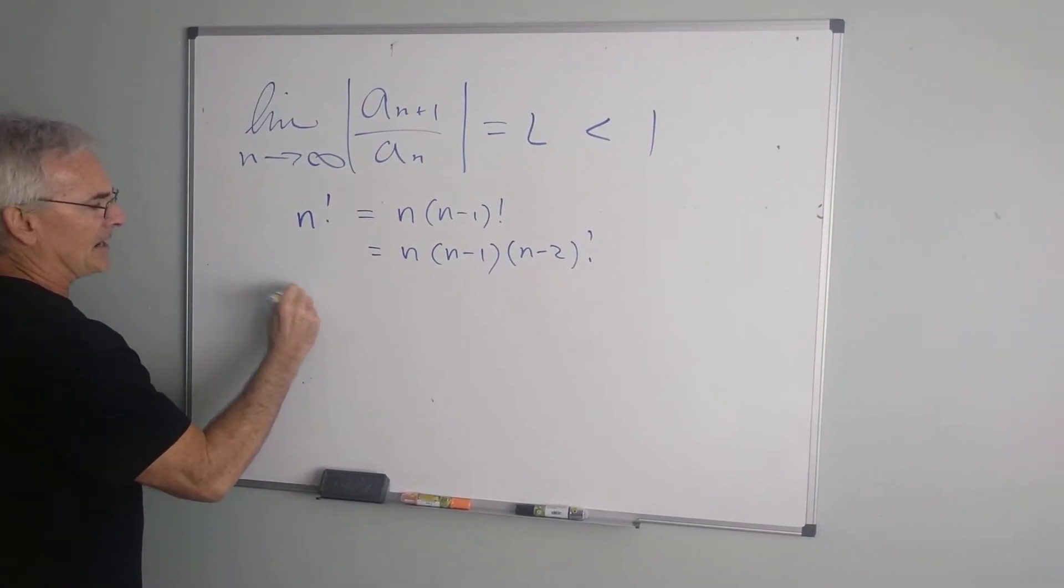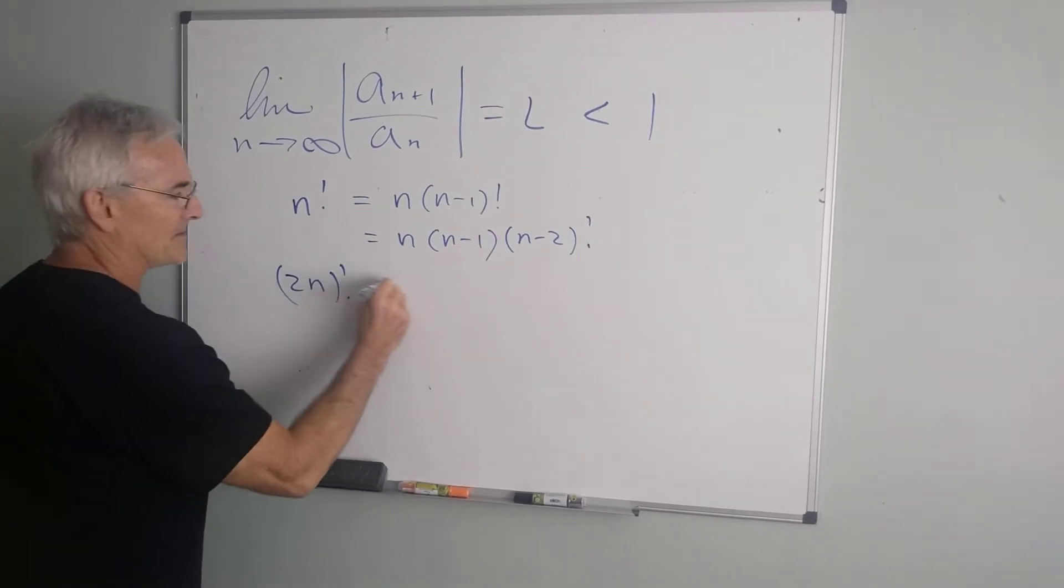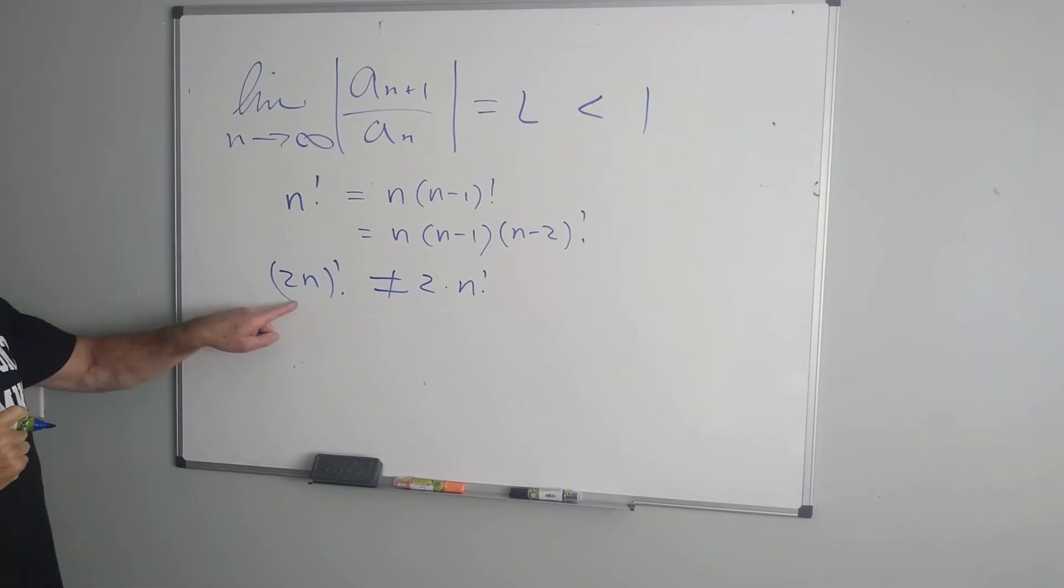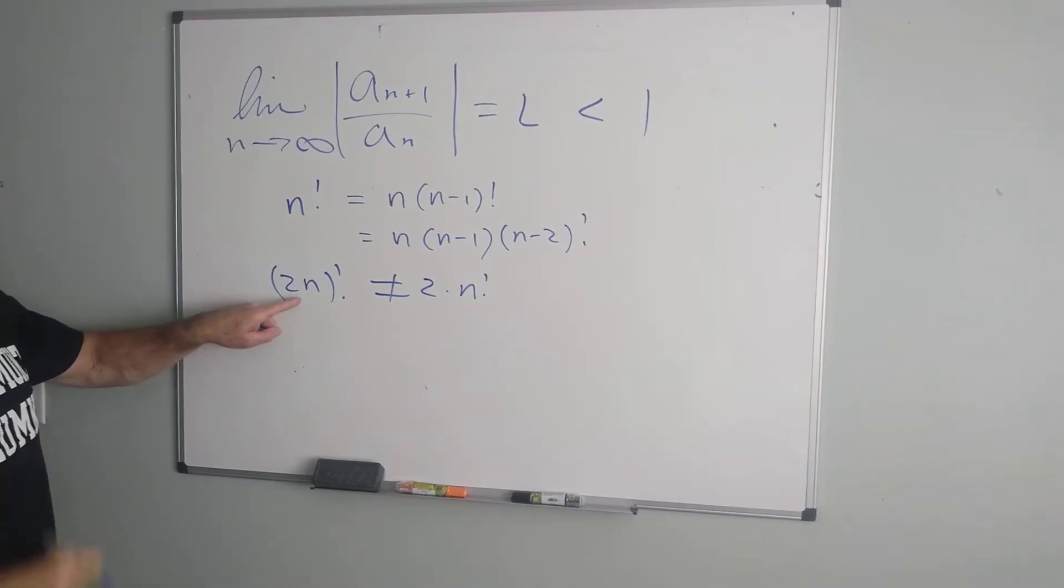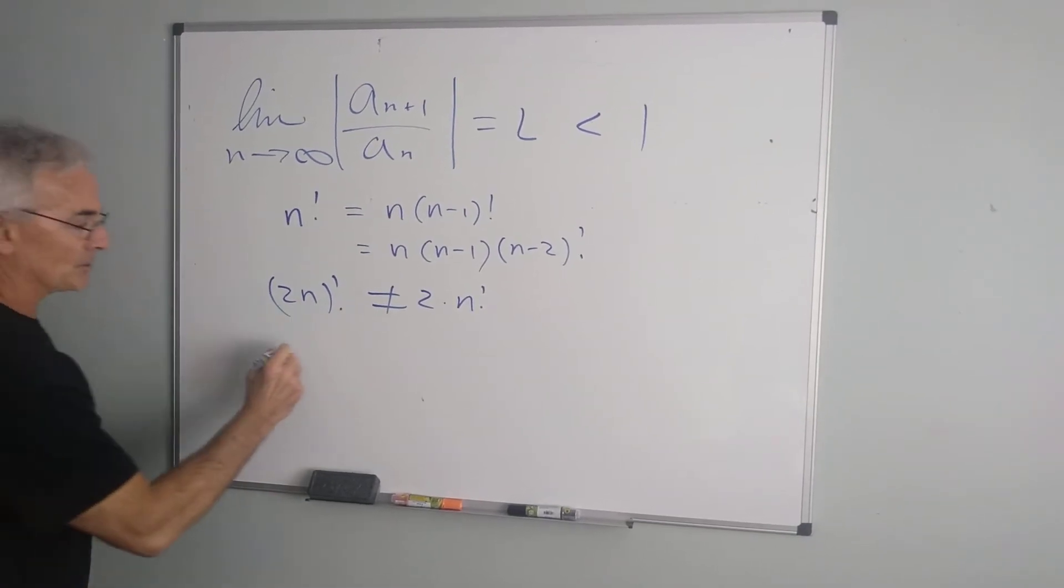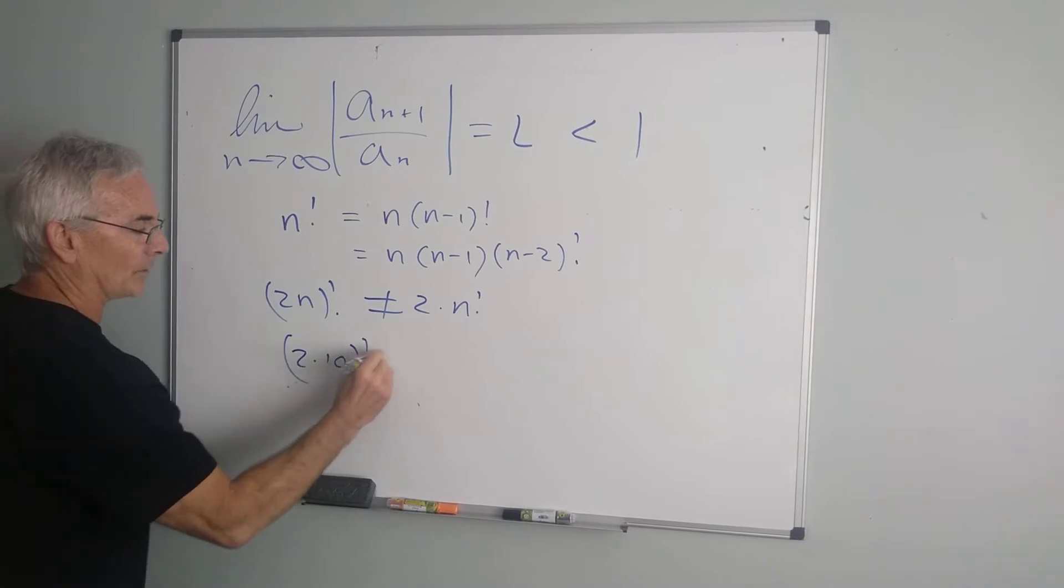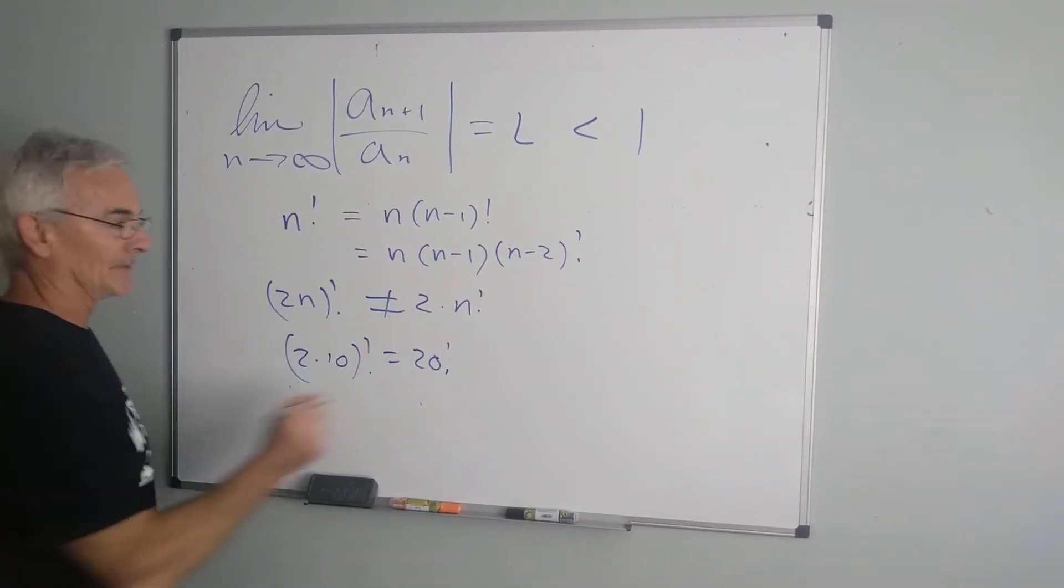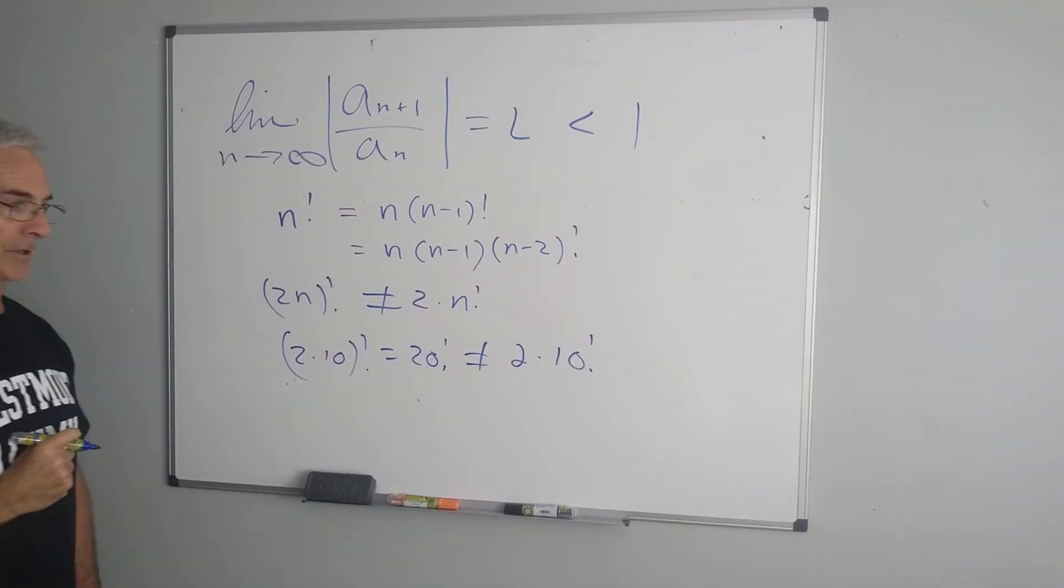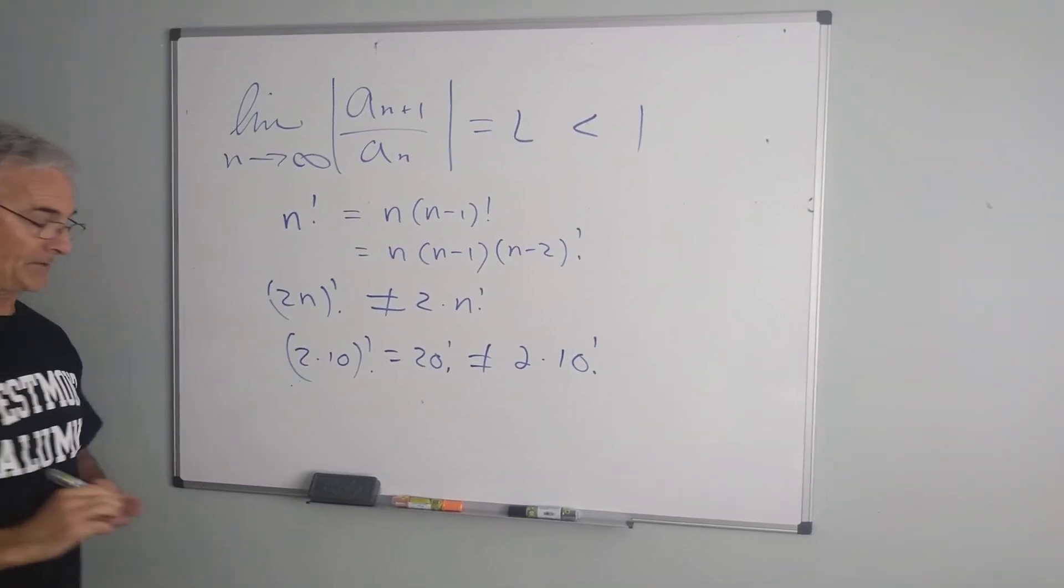Also, if I said I have 2n factorial, I want to expand that, that is not the same as 2 times n factorial. The parentheses here are critical. I'm taking the number 2n, and I'm starting from there and doing a factorial. So, if I said, for example, 2 times 10 factorial, that's 20 factorial. That is most definitely not equal to 2 times 10 factorial. So, we want to make sure we're very, very careful with our manipulation of parentheses.